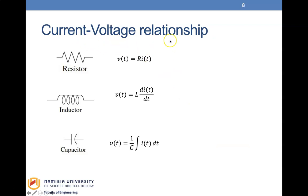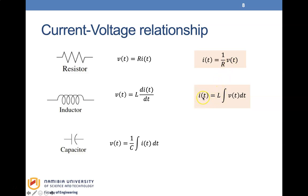We can also look at the current-voltage relationship, where we make current the subject of the formula. For the resistor, current equals (1/R)·V(t). For the inductor, current equals (1/L)·∫V dt. For the capacitor, current equals C·dV/dt. These are the current-voltage relationships.